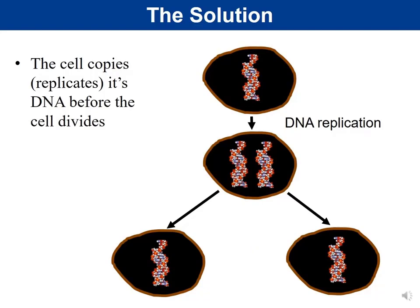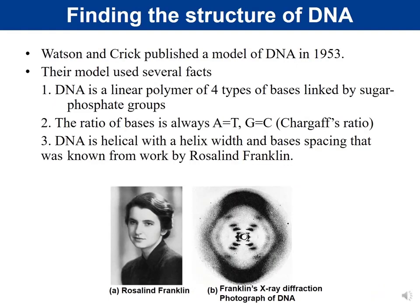The structure of DNA was published in 1953 by Watson and Crick, who proposed that DNA is a double helix. Their model used several known facts: DNA is a linear polymer of four types of bases linked by sugar-phosphate groups. Scientists had already found four types of bases — A, G, C, and T — and discovered Chargaff's ratio: A equals T and G equals C, regardless of species.